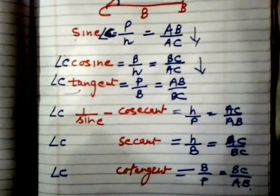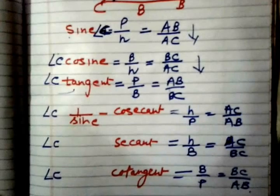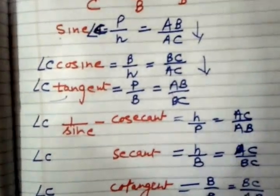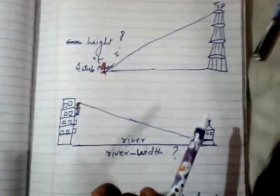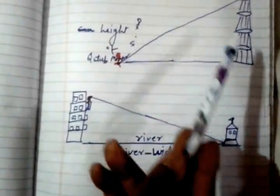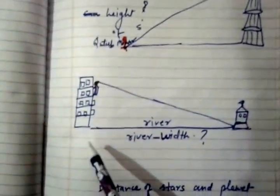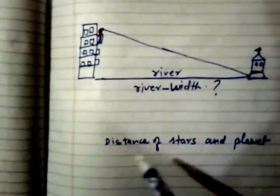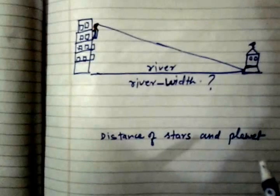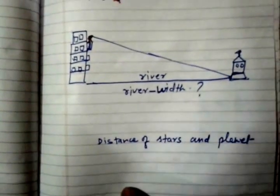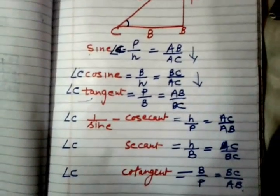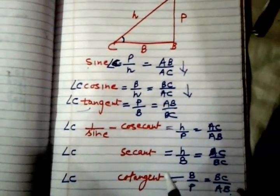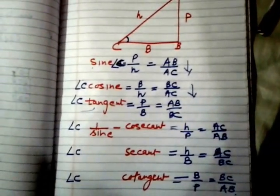So these are the formulas. With the help of these formulas, we can find out the distance which we cannot actually measure but we can calculate from these formulas - like for example, height of Kutub Minar, or width of river, or distance of stars and planets. So here I end this part, and we will learn more about this chapter in coming videos. Thank you, see you soon.